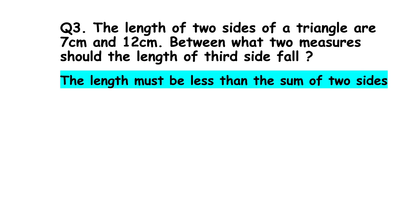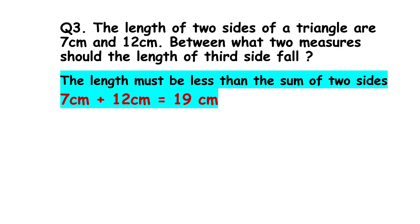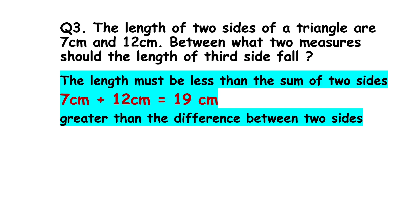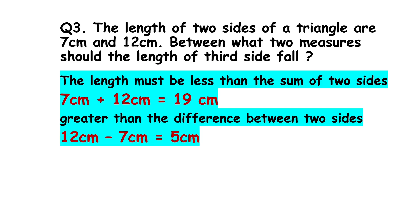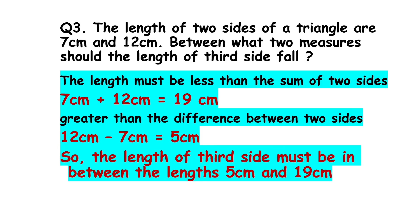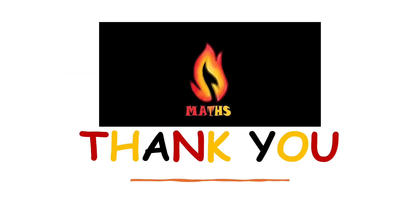The third side must be less than the sum of the two sides: 7 plus 12 equals 19 centimeters. It must also be greater than the difference of the two sides: 12 minus 7 equals 5 centimeters. So the third side must be greater than 5 centimeters and less than 19 centimeters. Hope everyone understood the concept of triangle inequality. Thank you.